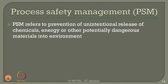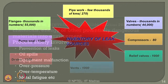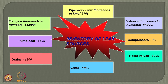Process safety management refers to prevention of leaks, prevention of oil spills, prevention of equipment malfunction, avoiding over-pressure, avoiding over-temperature, avoiding metal fatigue, etc. Looking at the inventory of leak sources from a recent publication, they can come from pipework, valves, compressors, relief valves, vents, drains, pump seals and flanges. People generally think that long underground or underwater pipes are the major potential source of serious hazards. However, the majority of potential inventory of leak sources do not come from pipework, because pipes are properly designed to handle deviations. The majority of failure seen as leak sources comes from flanges and valves, while vents, pump seals and compressors are not very significant contributors by comparison.